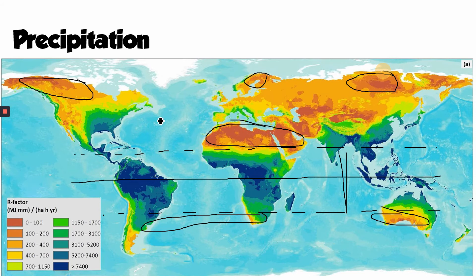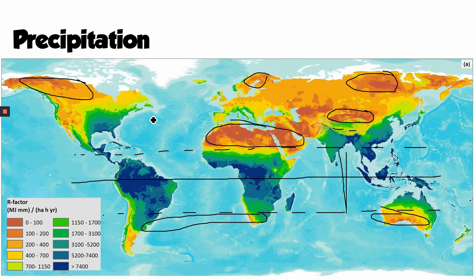The Gobi Desert and Tibetan desert region are driven by the Himalayas mountain range creating a rain shadow effect. Precipitation varies from place to place because the air is at different temperatures: warm air near the equator between the tropics holds much more moisture than the colder air near the poles.